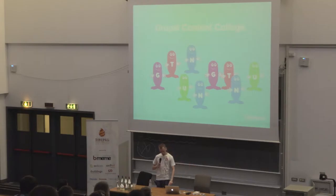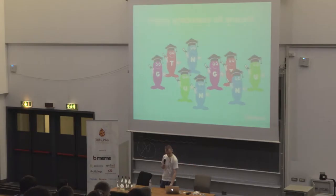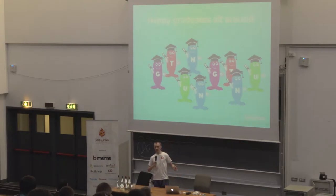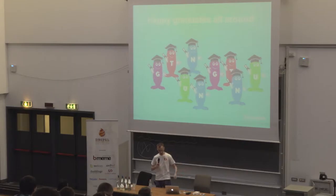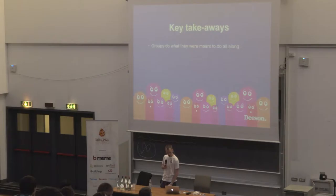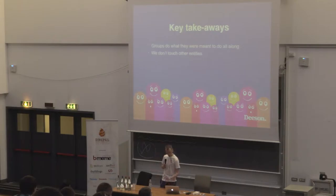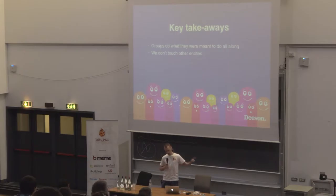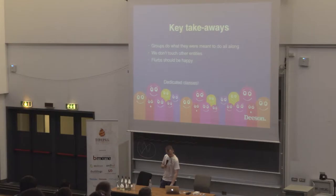Group fixes this — it makes the Flurps happy again. How? By introducing a new major at the Drupal Content College. The new major is group. So when graduation day comes, there are happy graduates all around, because those guys who were told they needed to be groups are now actually qualified to be groups. The key takeaway: groups do what they were meant to do all along, and we don't touch other entities.